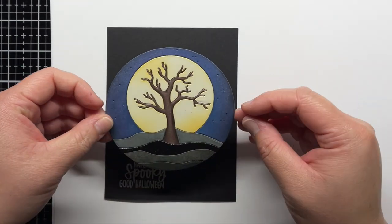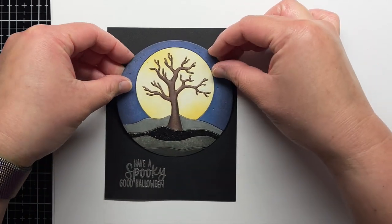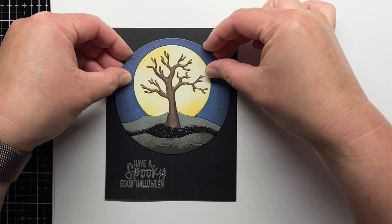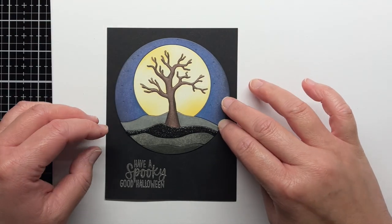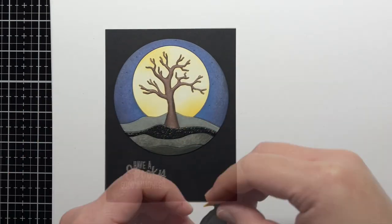After the Circlescape is assembled, I adhere it to my panel and add the Raven with foam mounting tape for a little extra dimension. Off-camera, I use a white gel pen to add the stars to the sky and finish the card with a tiny blood-red gem for the Raven's eye.